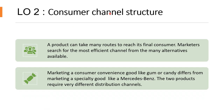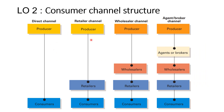Moving on to the consumer channel structure — learning objective number two. A product can take many routes to reach its final consumer, from where the product is made in a factory to where it reaches the consumer. Marketers search for the most efficient channel from the many alternatives available. For example, marketing consumer convenience goods like gum or candy requires a different channel structure from marketing specialty goods like an iPhone, laptop, or Mercedes-Benz.